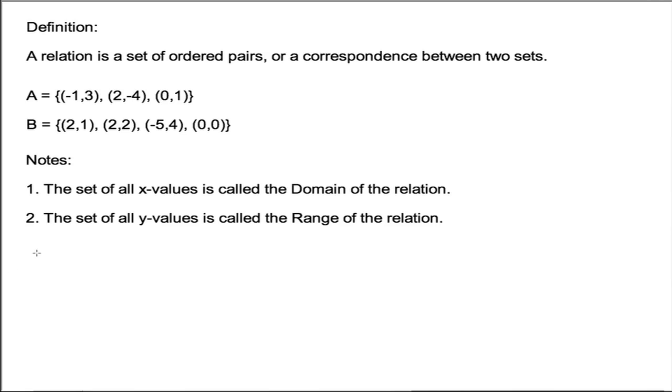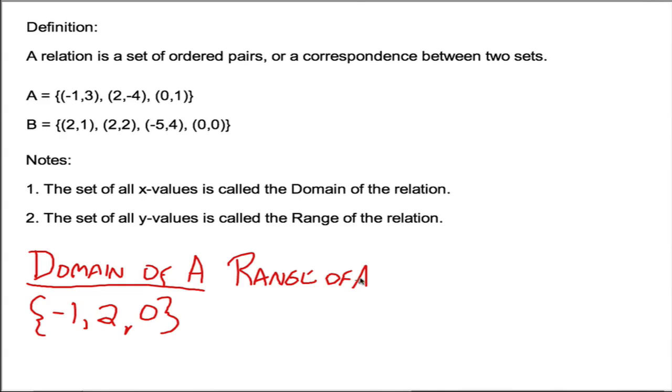For the example we have here, the domain of A is a set. Just take all the X values. So we'd have negative one, two, zero. Those are the only three numbers in the domain of A. And the range of A would be just take all the Y values: three, negative four, and one.